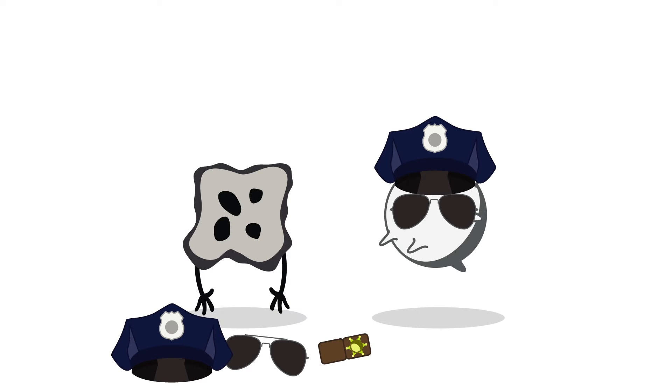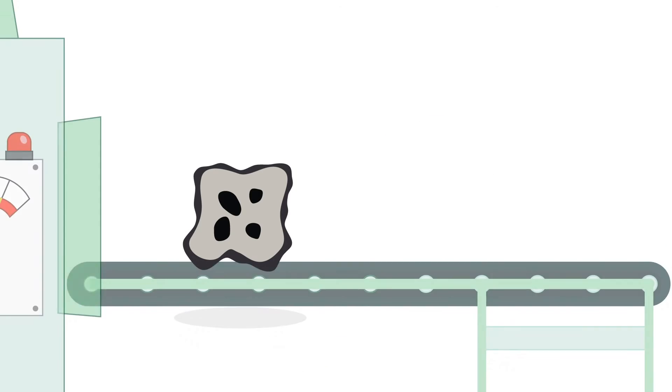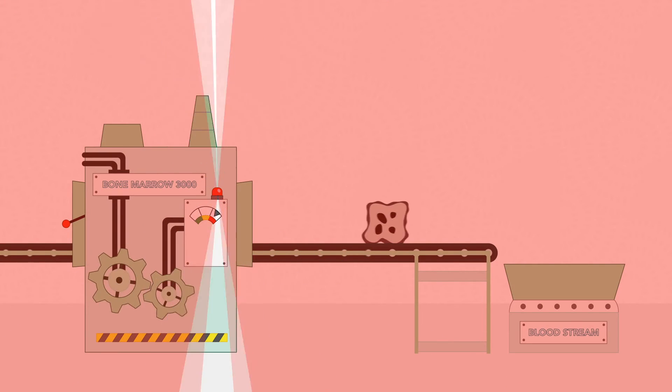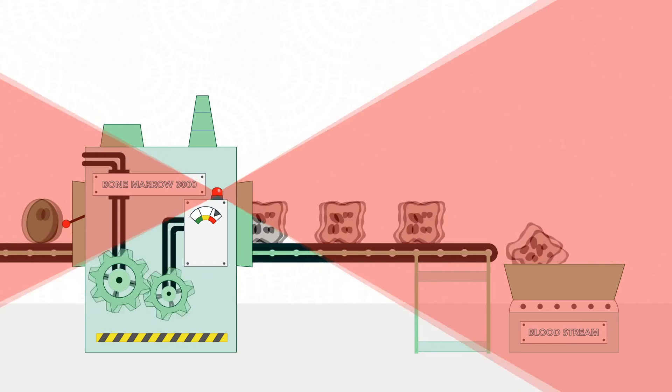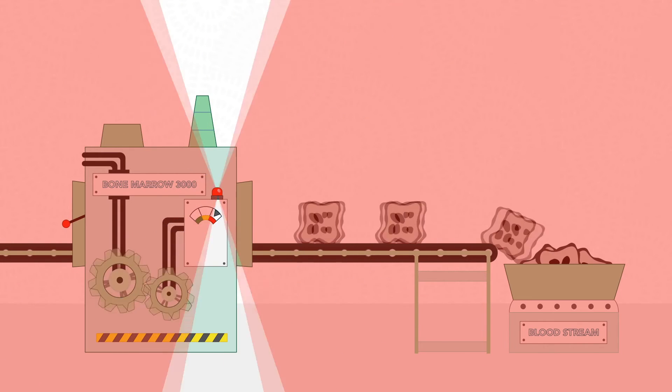There are other problems with cancer cells, too. For example, when they multiply and divide, they do not know when to stop and when to die off. And they will destroy good cells close to them.